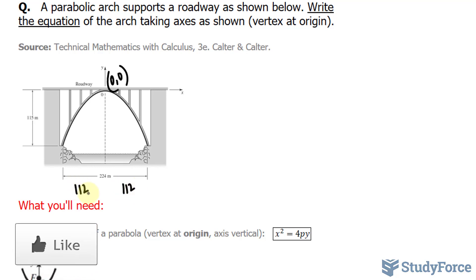With that being said, we have two major points. The x-coordinate of this point will be negative 112 because it's to the left of the origin. And the y-coordinate will be negative 115 because it's below the x-axis.